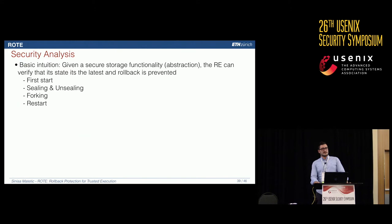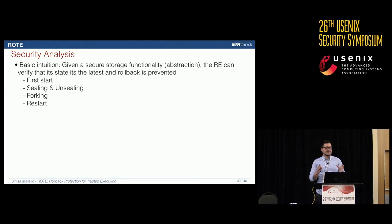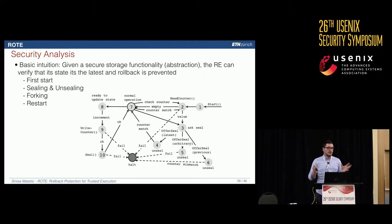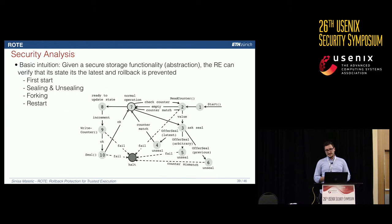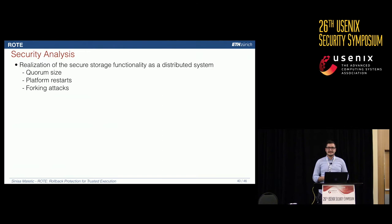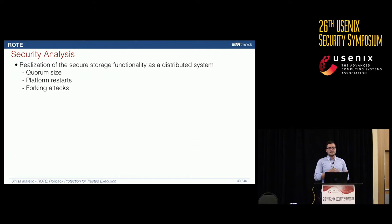For security analysis, we split it into two parts. First: if we have a protected space acting as secure storage, the rollback enclave can verify its state is the latest — we proved all cases and paths. Second: the realization of this abstraction as a distributed system, addressing quorum size for network partitioning, platform restarts, and multiple enclave instances in the form of forking attacks.